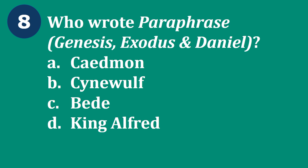Question 8: Who wrote the paraphrase in which we find poems Genesis, Exodus, and Daniel? A. Cadmon, B. Seinwolf, C. Bede, D. King Alfred. The correct answer is A — Cadmon. Cadmon wrote the paraphrase in which we find Genesis, Exodus, and Daniel.